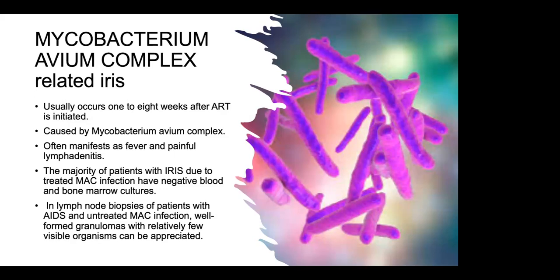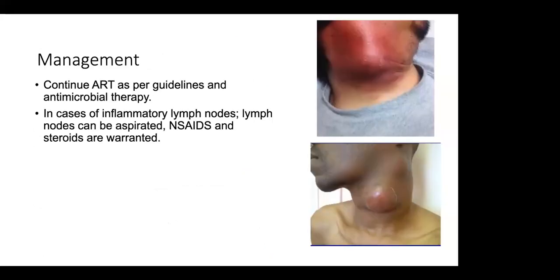Mycobacterium avium complex-related IRIS usually occurs one to eight weeks after initiation of ART. It is caused by Mycobacterium avium complex and often manifests as fever and painful lymphadenitis. The majority of patients with IRIS due to untreated MAC infections have negative blood and bone marrow cultures. In lymph node biopsies of patients with AIDS and untreated MAC infection, well-formed granulomas with relatively few visible organisms will be seen. Management: continue ART per guidelines and treat with azithromycin, ethambutol, and rifampicin. In cases of inflammatory lymph nodes, lymph nodes can be aspirated. NSAIDs and steroids are warranted in MAC IRIS.